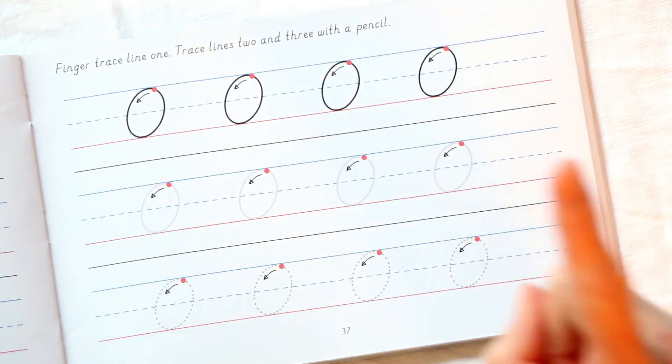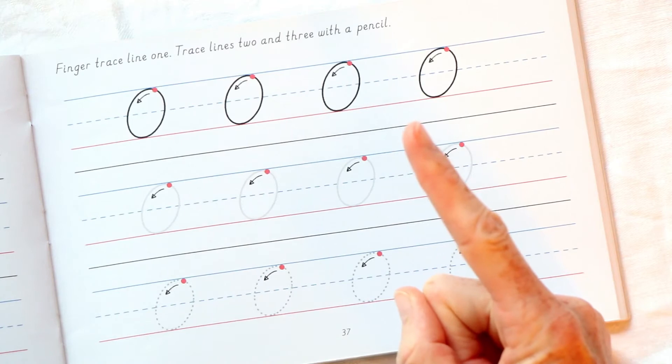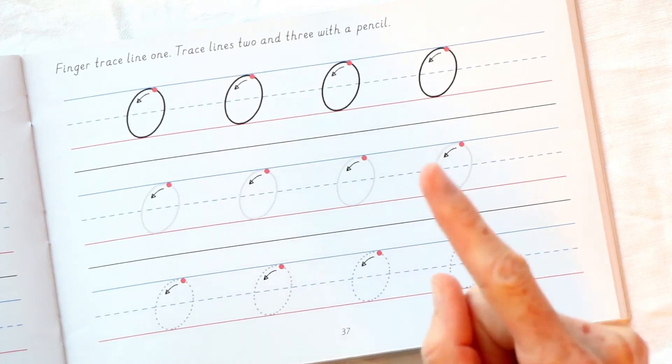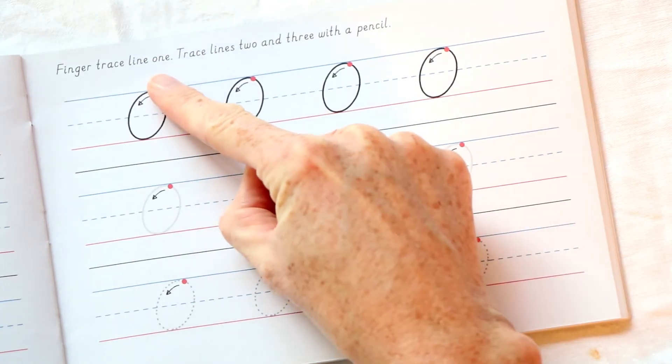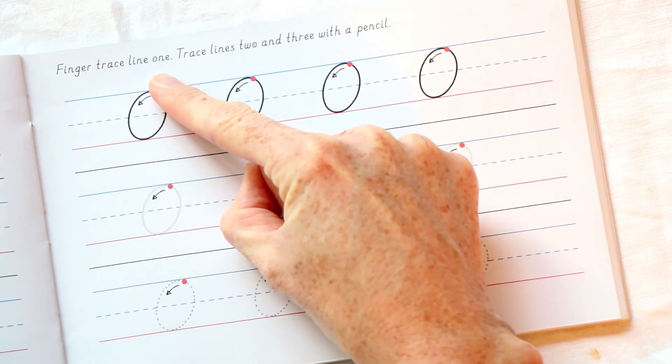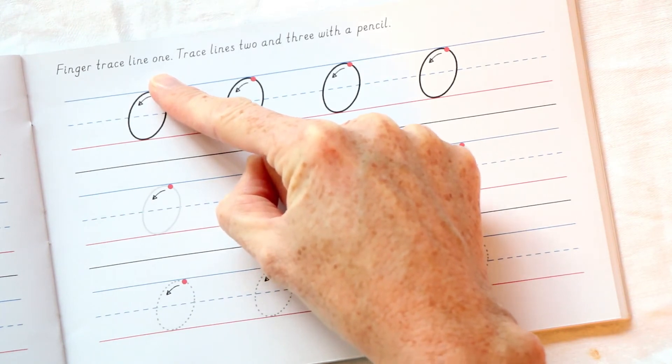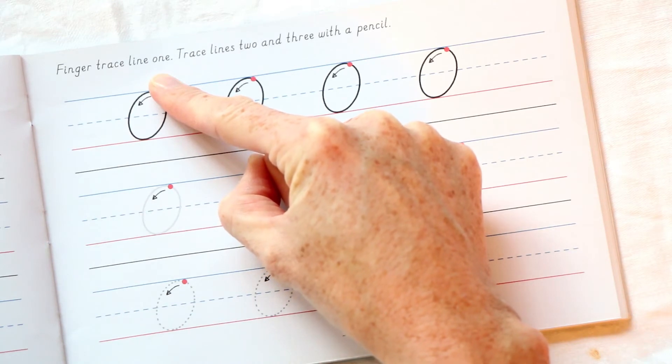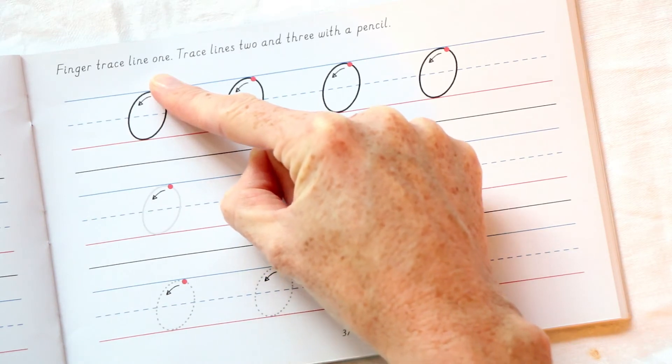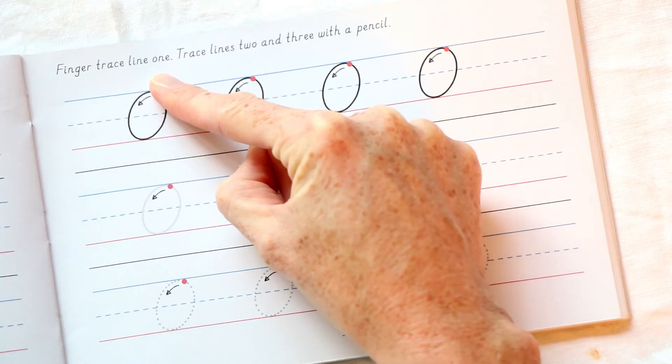So let's get our finger ready. Let's find the starting point. There it is. Put your finger on the starting point and now make sure your legs are in front of you, make sure you are seated comfortably, and your body is sturdy so that it can support good handwriting.